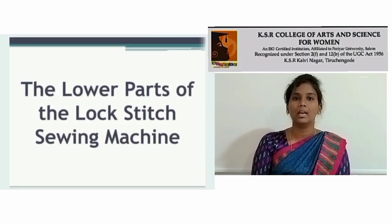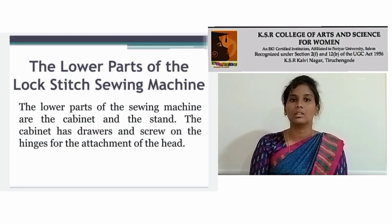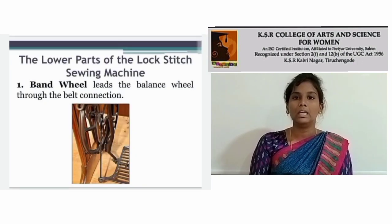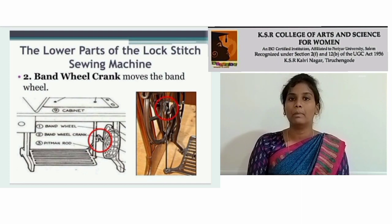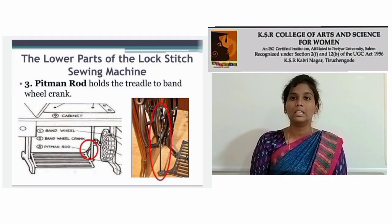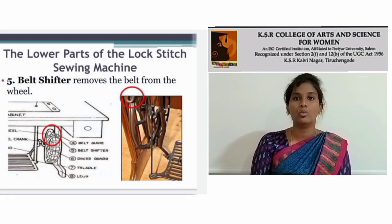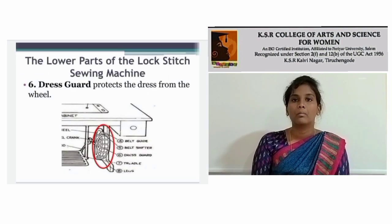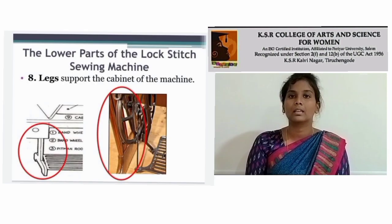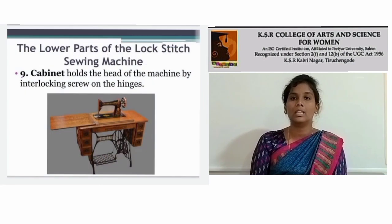The lower part of the sewing machine consists of the cabinet and the stand. The cabinet has drawers and stores the attachments of the head. Band wheel — leads the balance wheel through the belt connection. Band wheel crank — moves the band wheel. Pitman rod — holds the thread to the band wheel crank. Belt guide — holds the belt in place. Belt shifter — moves the belt from the wheel. Dress cord — protects the dress from the wheel. The stand supports the cabinet of the machine. Cabinet holds the head of the machine by interlocking.